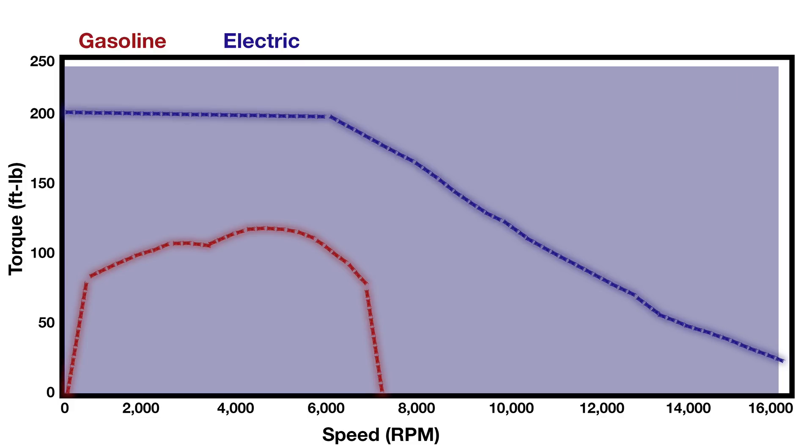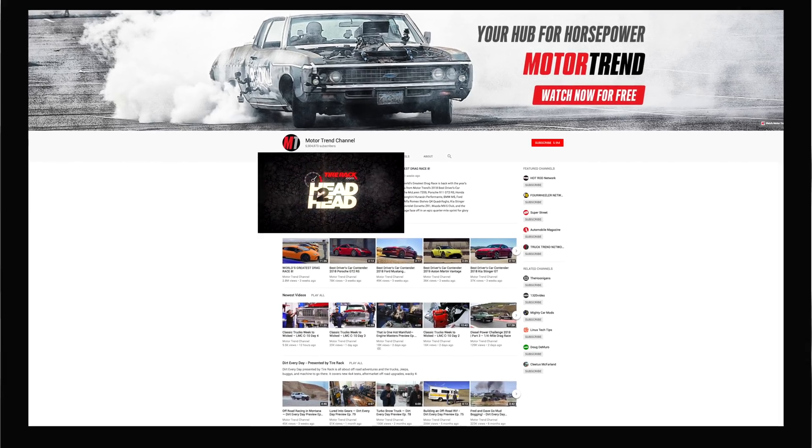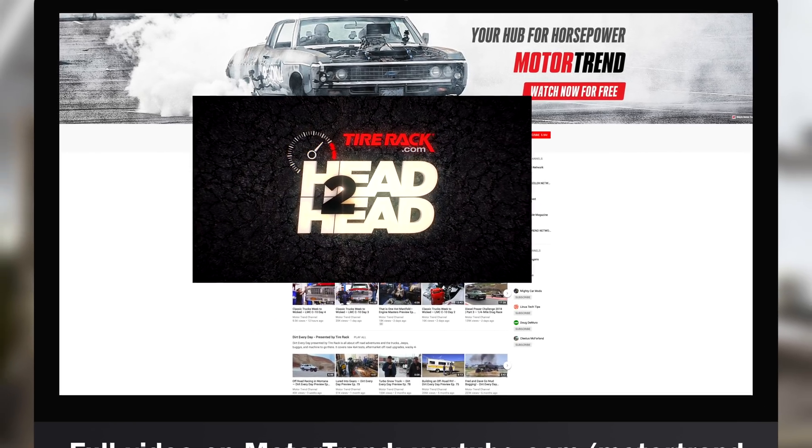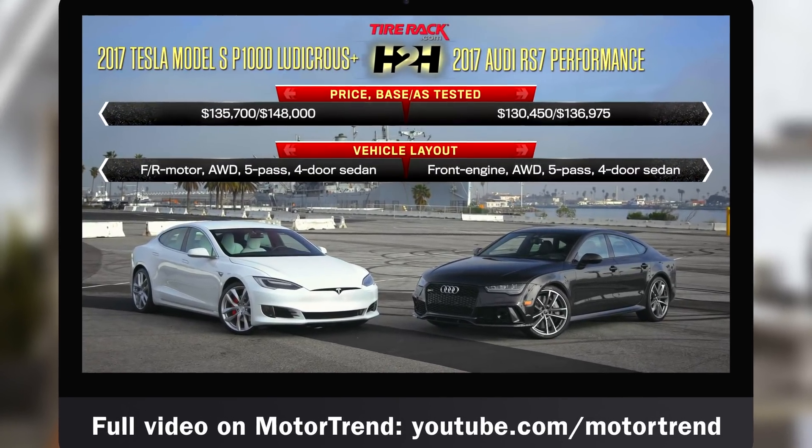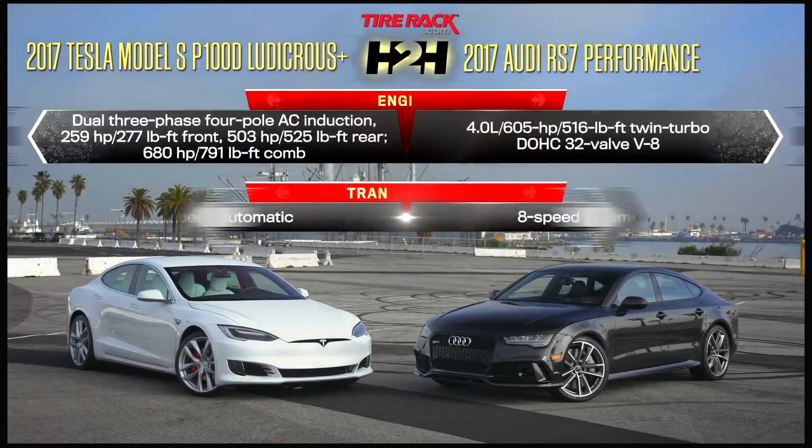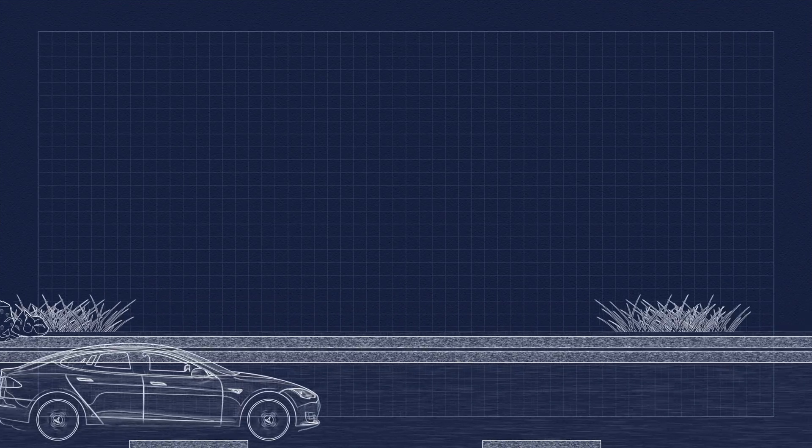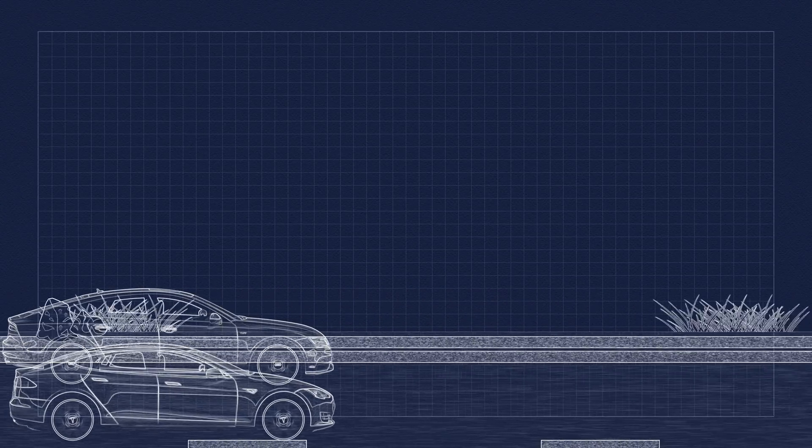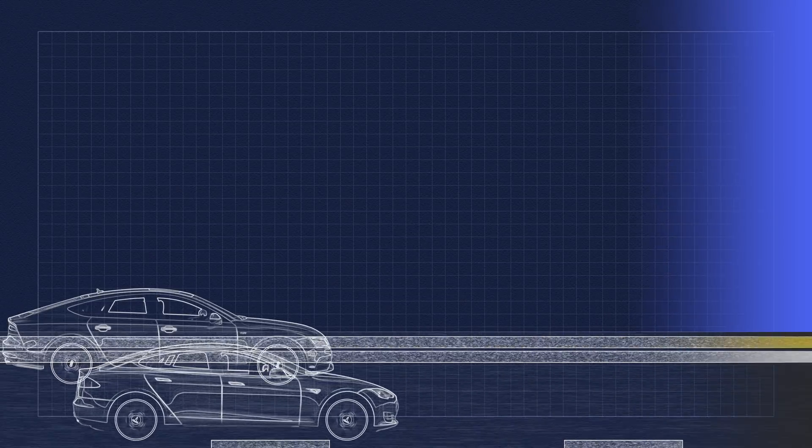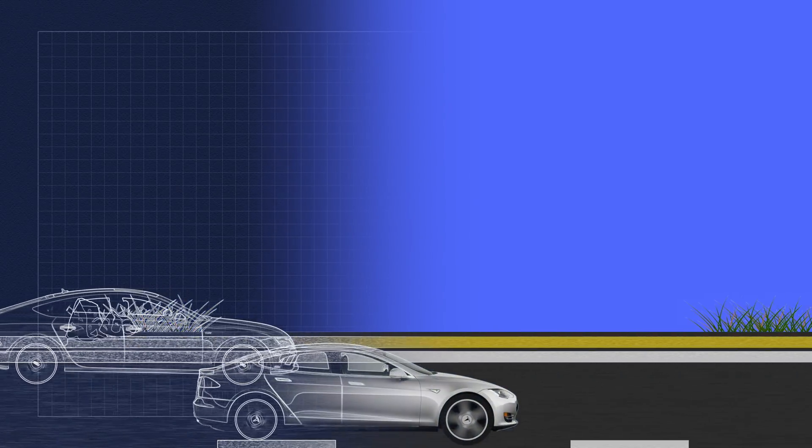To get the best real-world idea of how these two power plants differ, let's take a look at a comparison that Motor Trend did back in 2017. They pitted a Tesla Model S P100D with Ludacris mode against an Audi RS7 performance model in a drag race. So let's break this down. The Tesla jumps out to an early lead due to its instant torque being fed to all four wheels.